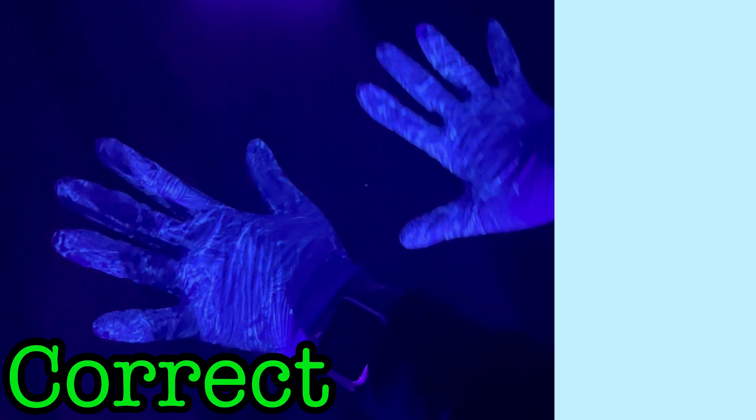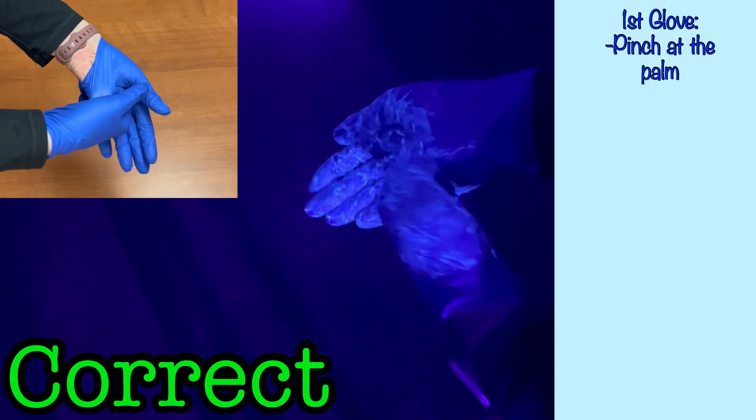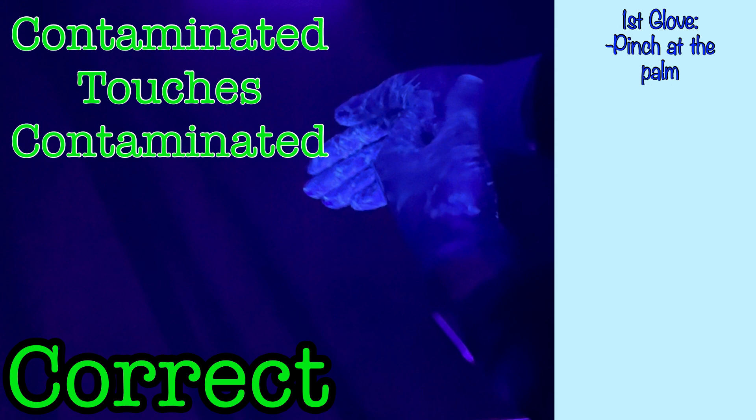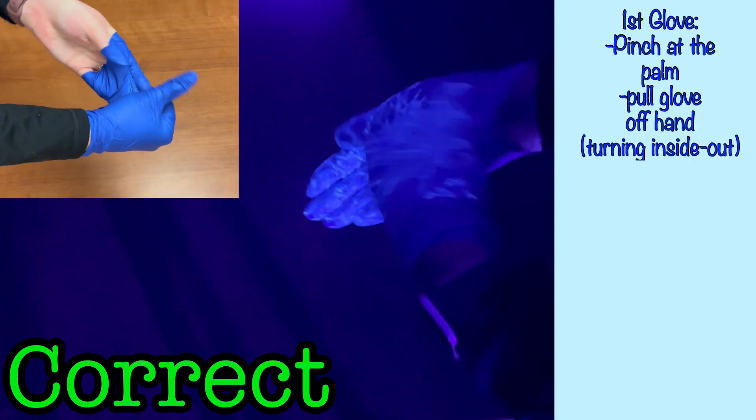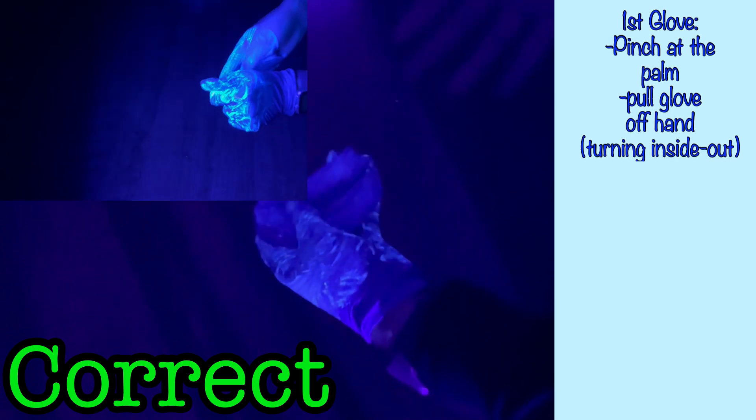The correct method for removing the first glove is to grasp by pinching the glove at the palm, so your gloved hand will not come into contact with any skin or clothing. The contaminated surface of one hand will only contact the already contaminated surface of the other hand. Then gently pull the glove off the hand, turning the glove inside out in the process. This will minimize the flinging of contaminant we saw with the incorrect method.